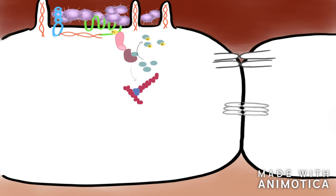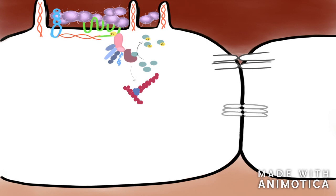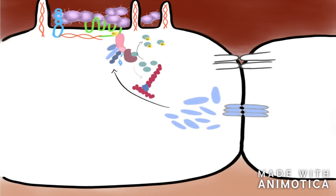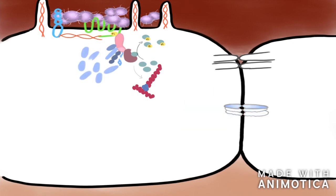Furthermore, beta-arrestin functions as a docking site for several proteins that are components of the cytoskeleton, for instance E-cadherin. By sequestering these adhesion proteins, beta-arrestin prevents their role in maintaining cell-to-cell contact, and the endothelial cells detach from each other.